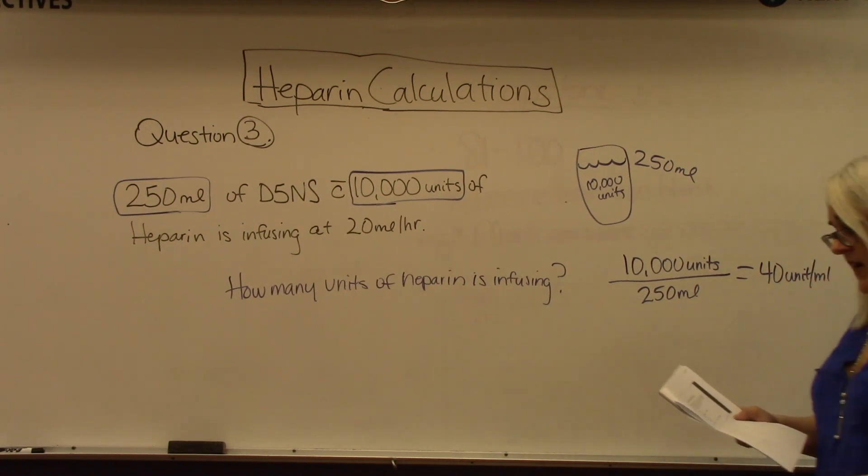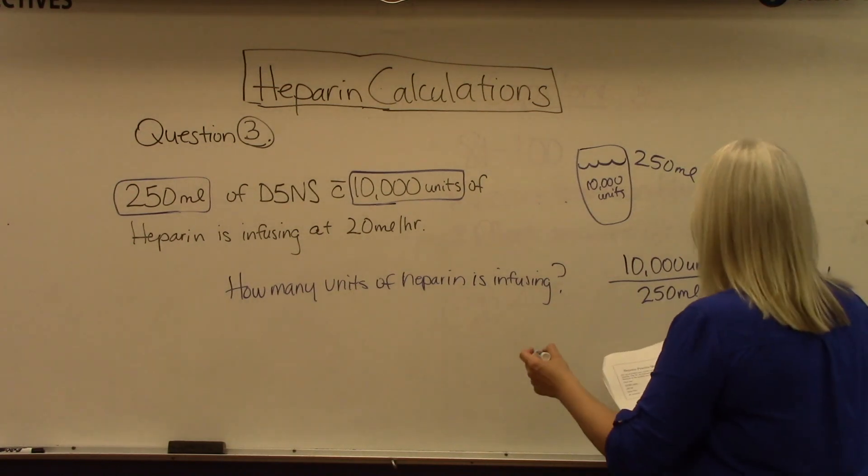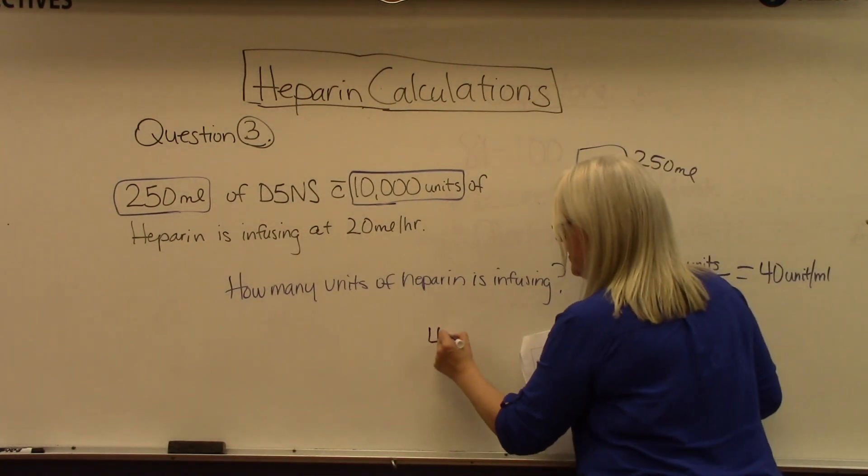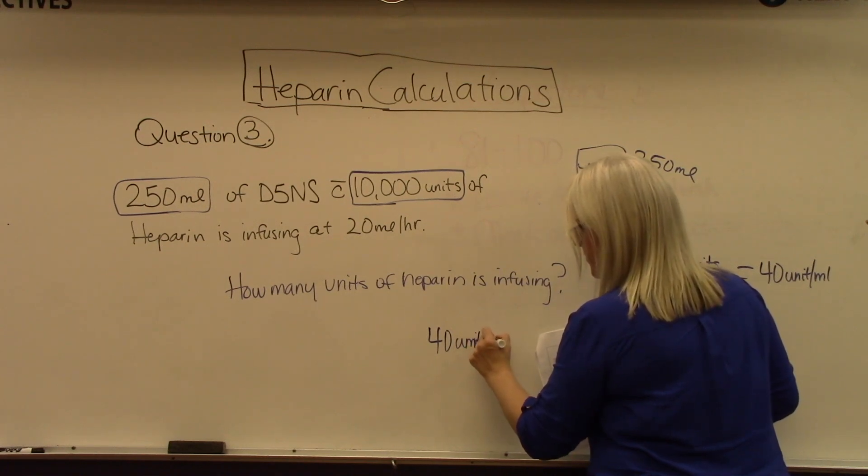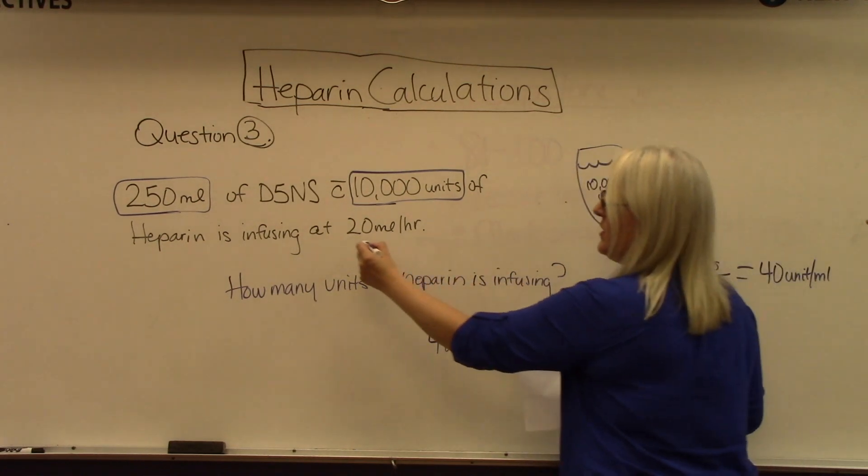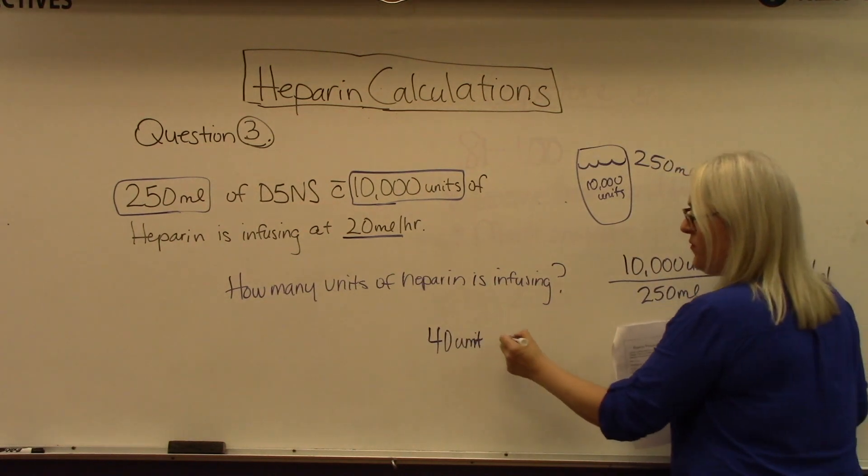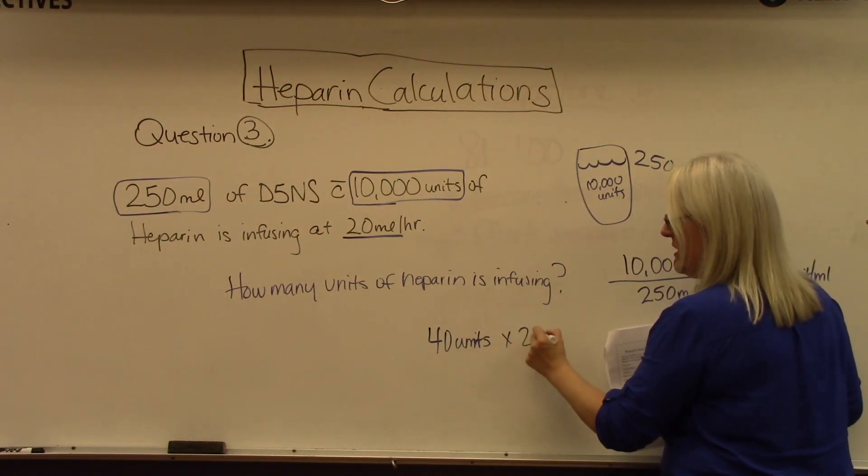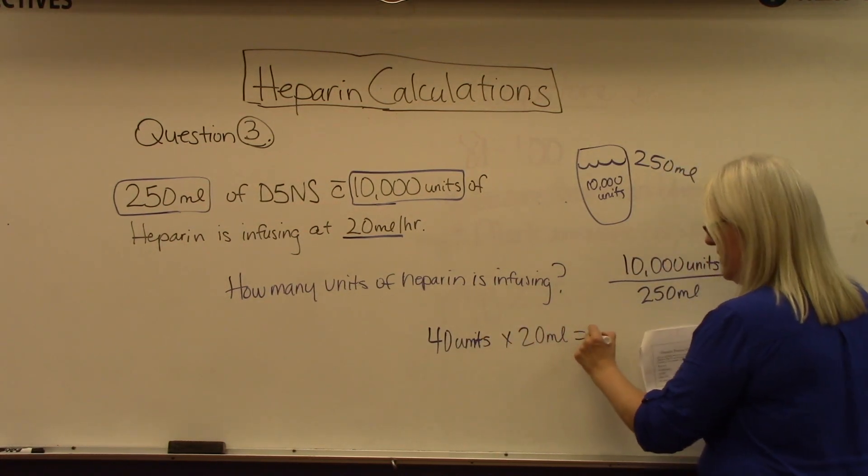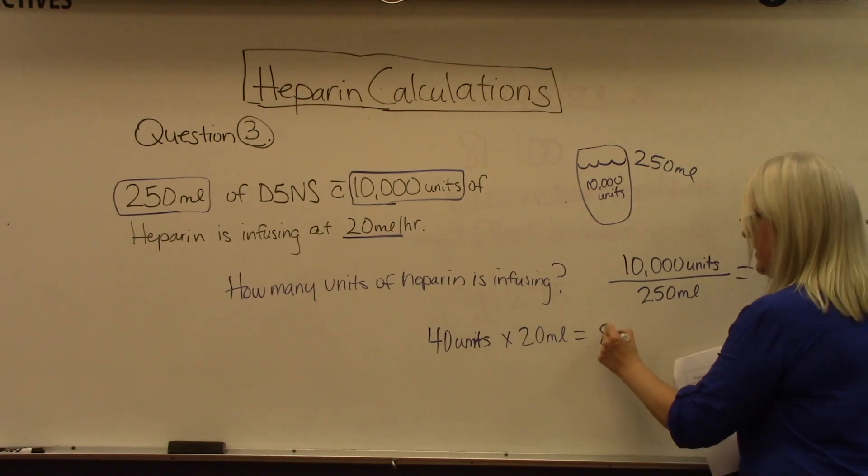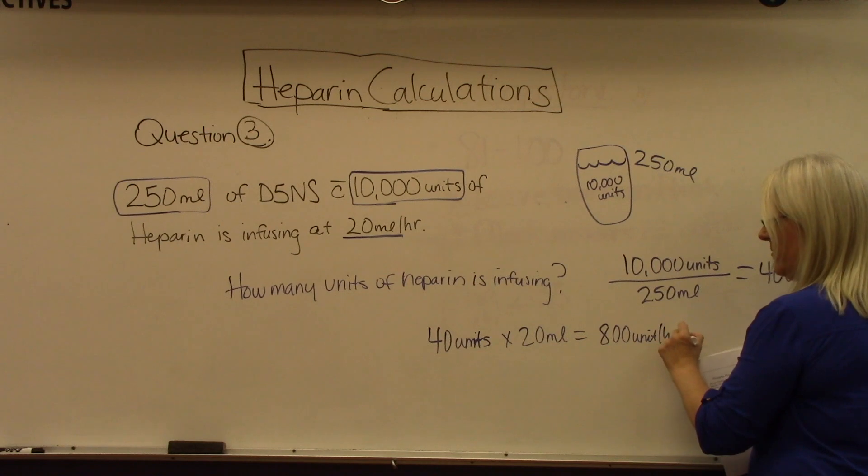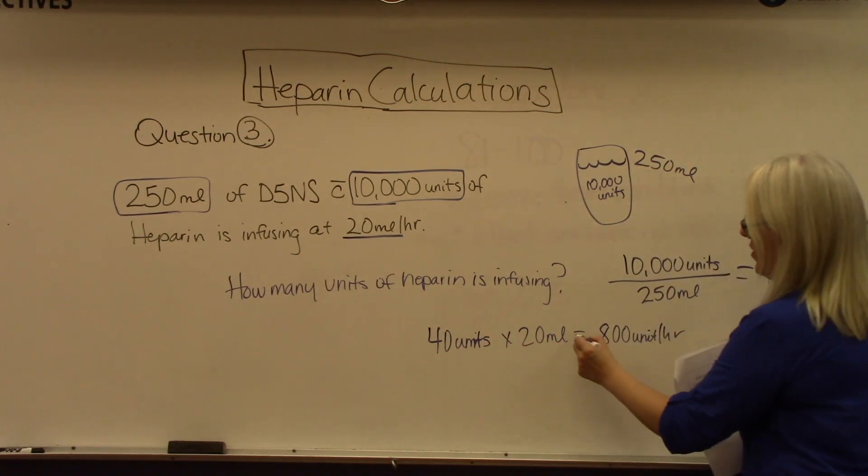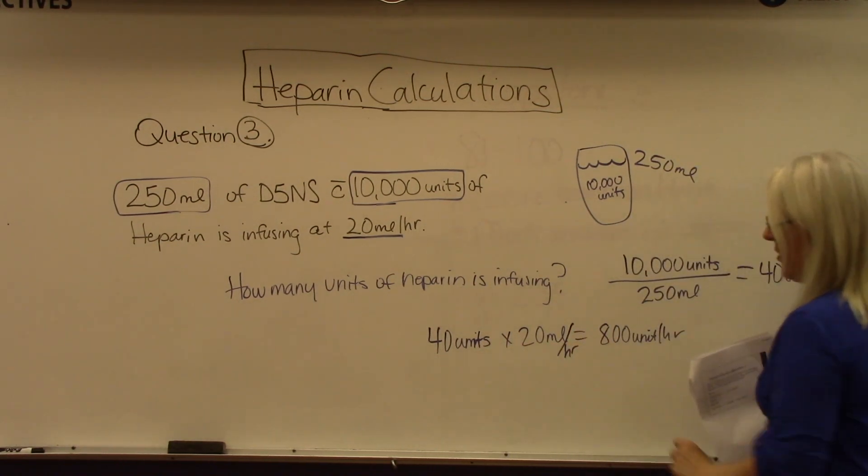From there, we do step two. If we have 40 units in one milliliter, how many do we have in 20 milliliters? It's 40 units times 20 milliliters, and that's going to give us 800 units per hour because we know it's milliliters per hour.